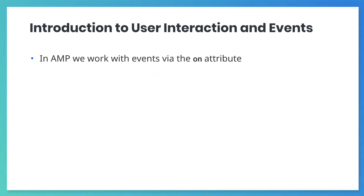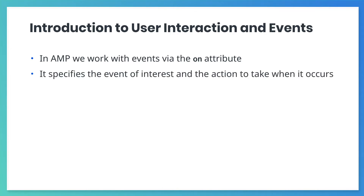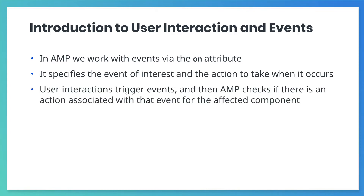In AMP, we handle events using the on property. We can set the on property to indicate a desire to react to an event of interest. We also specify the action to take when that event occurs. So when the user performs an action on a site, AMP checks if there is an action associated with that event for the affected component.